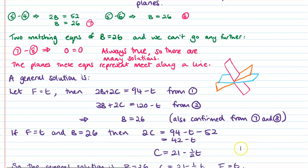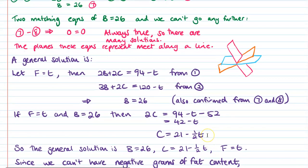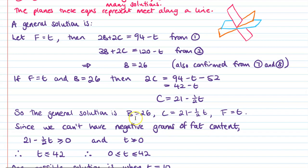Then the next thing, if F is T and B is 26, then we can go on and work out what C is. So going back up to one of these, 2C would be equal to 94 minus T minus 52. So C is 21 minus a half T. So our general solution is that the Big Macs are 26, the cheeseburgers would be 21 minus half of T and the fries would be equal to T.